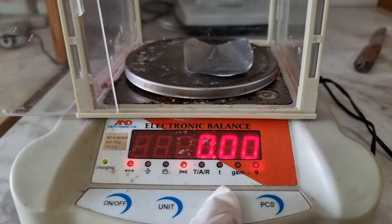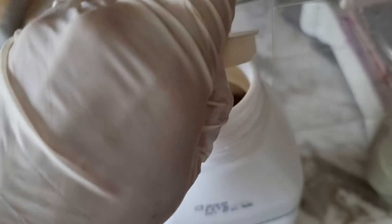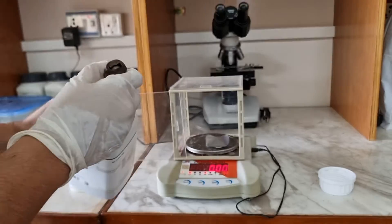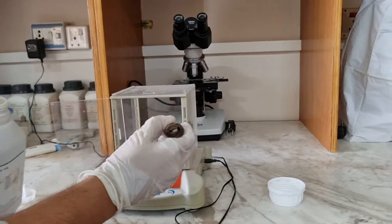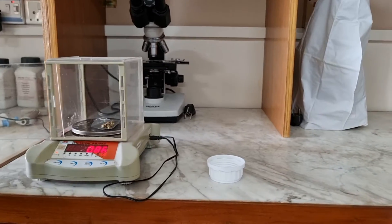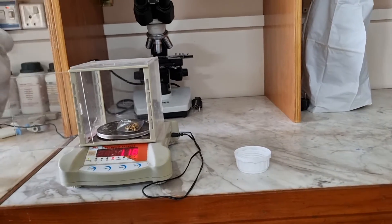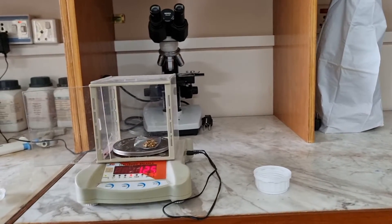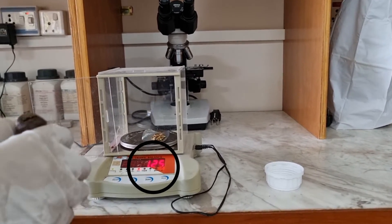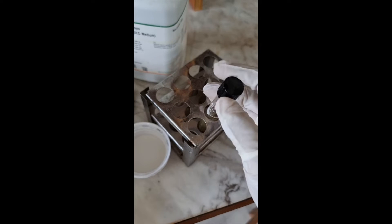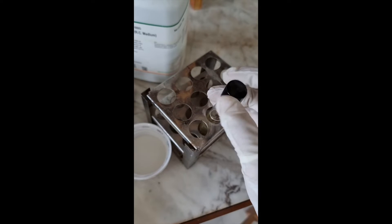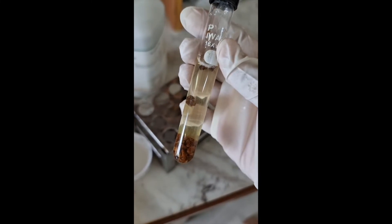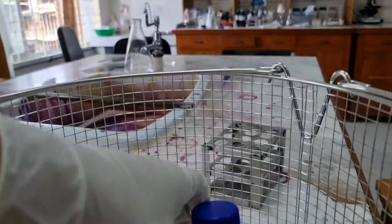Then we're gonna measure 1.25 grams of Robertson's cooked meat media. After mixing thoroughly, we allow the mixture to stand for 15 minutes. Finally, it's time for autoclaving.